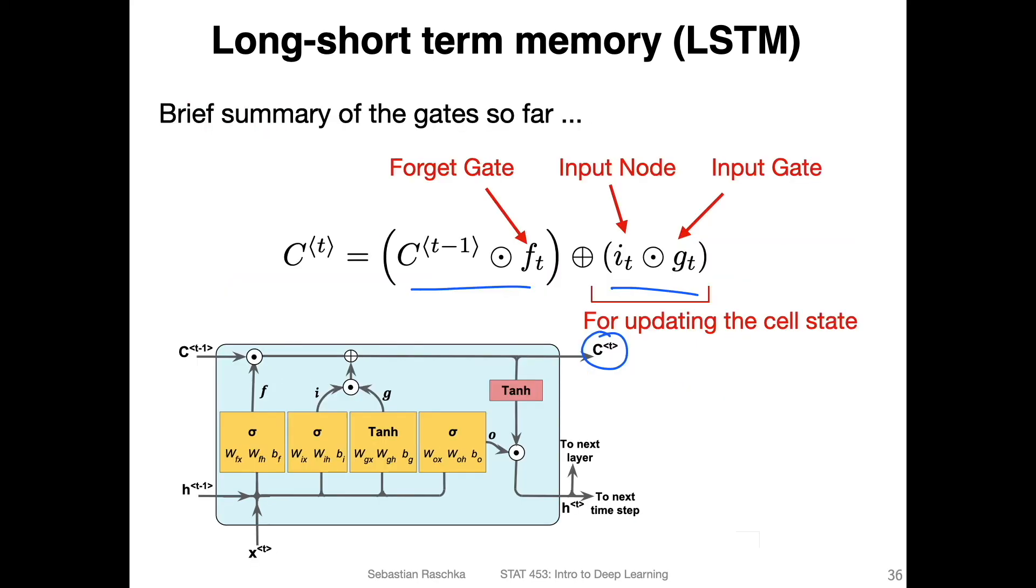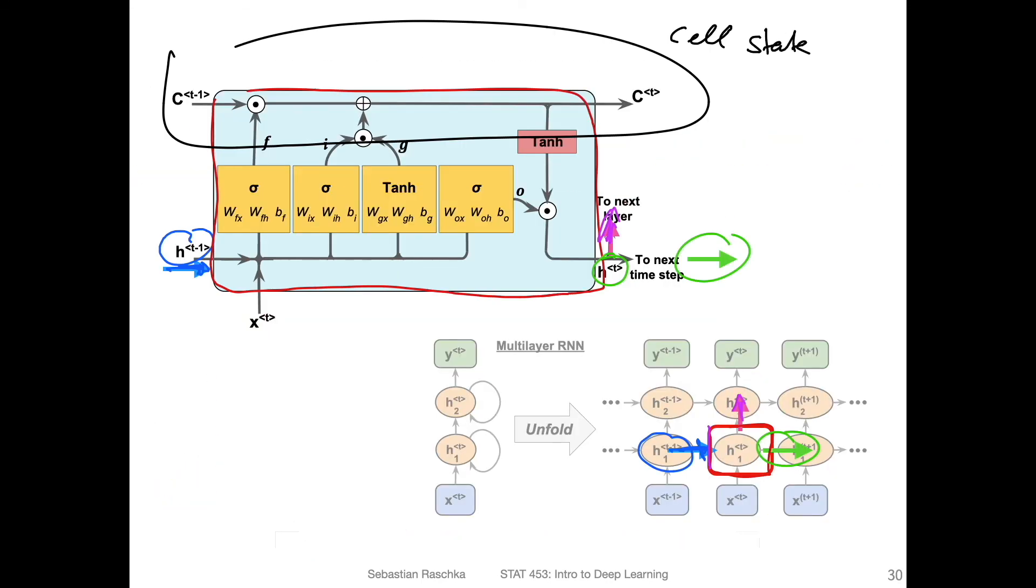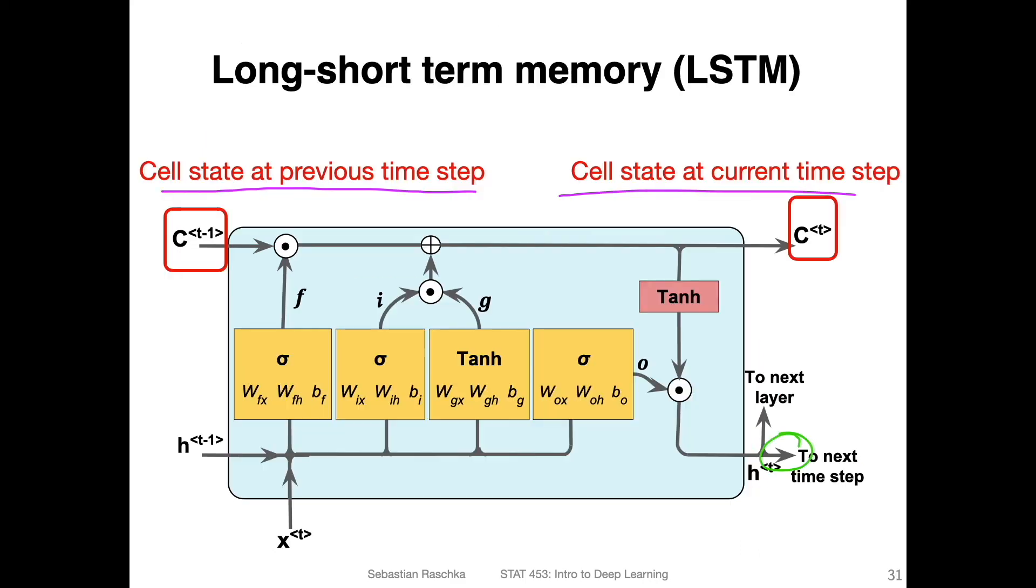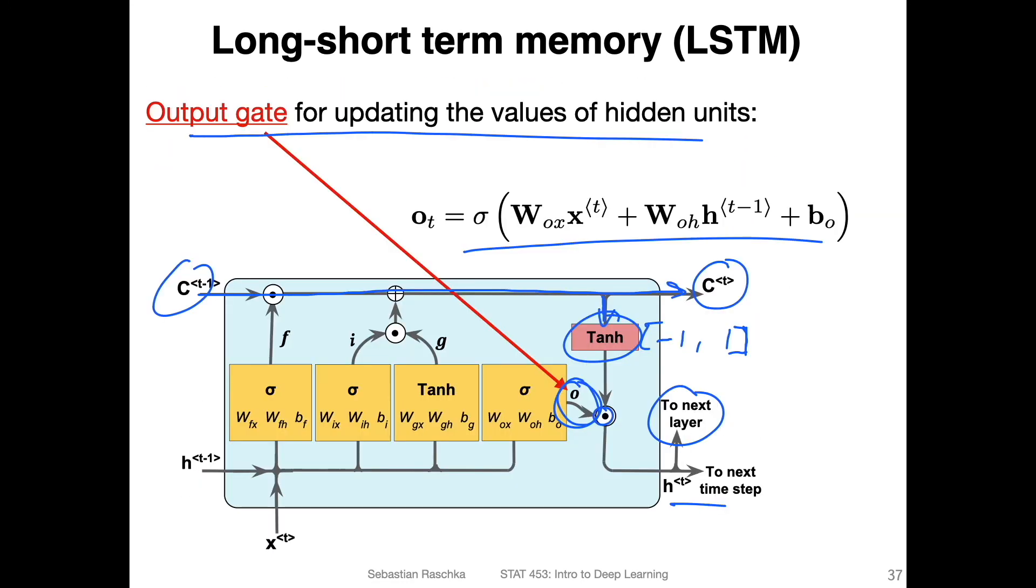The product of this tanh output and this output gate goes then to the next time step and also to the next layer in the neural network. It goes either here and here if we talk about this red one. This would be to the next layer here, and this one would be to the next hidden state. This is what we had - that's the output gate.